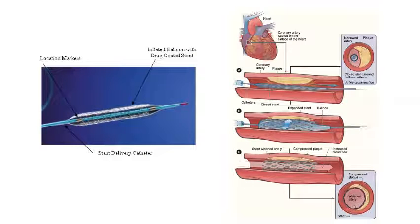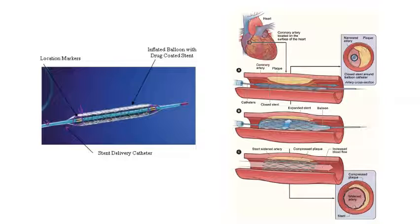To recap: we have a stent delivery catheter — essentially a plastic tube — that has a balloon bonded to it. The guide wire goes through the tube, and there are little gold band location markers on it so you can visualize where the stent is during the procedure, as they are radiopaque. The balloon then inflates with a drug-coated stent on it.